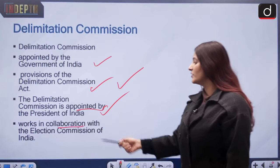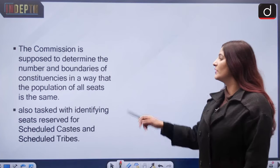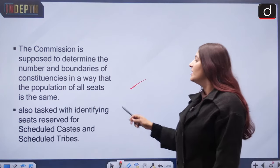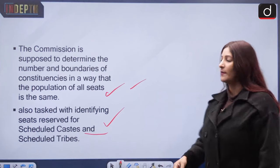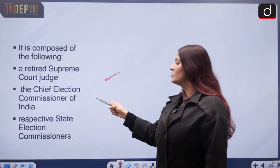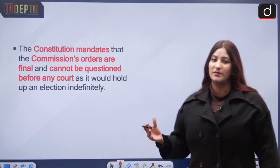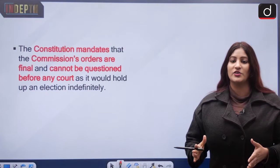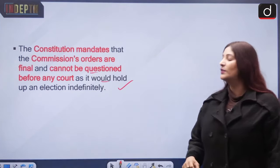Regarding composition, the Delimitation Commission comprises a retired Supreme Court judge, the Chief Election Commissioner of India, and the respective state election commissioners whenever state legislative assemblies are concerned. The constitution mandates that the commission's orders are final and cannot be questioned before any court, as challenging such orders would hold up elections indefinitely. In a democracy like India, where elections are frequent, keeping this process open-ended would be counterproductive.